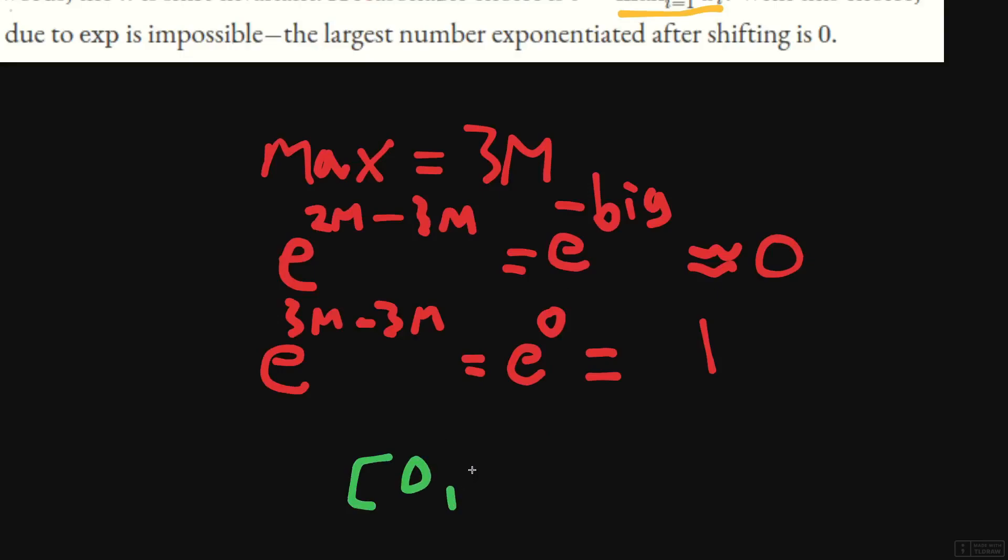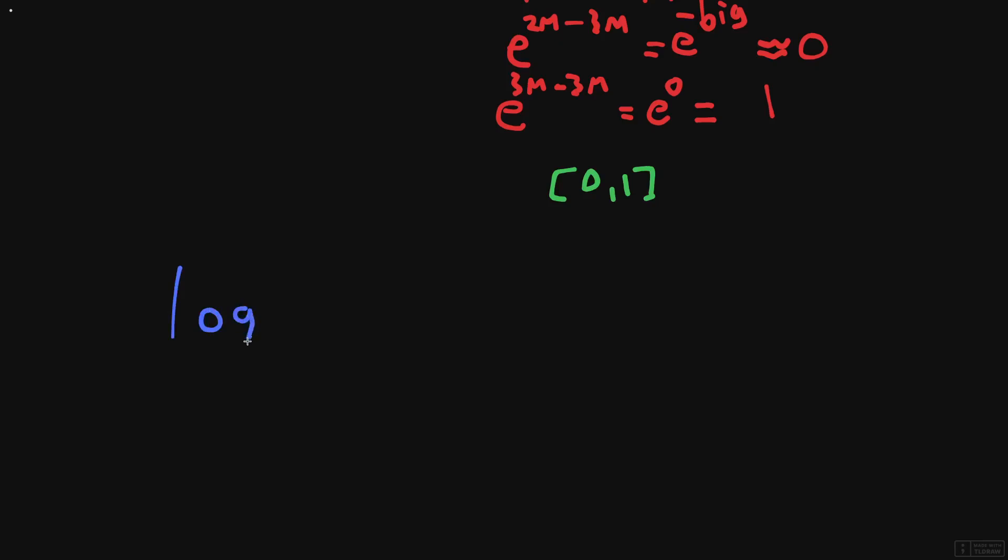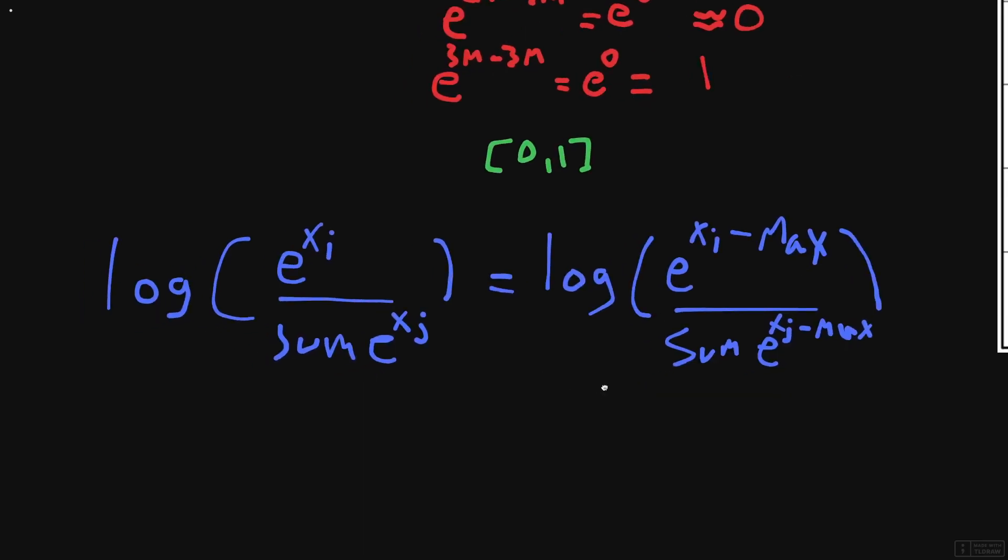So the quantity will always be bounded by 0 and 1. If we rewrite our function, we have log of the softmax, which is e to the xi divided by the sum of e to the xj, and then what we're doing here is we're saying this is the same thing as that.